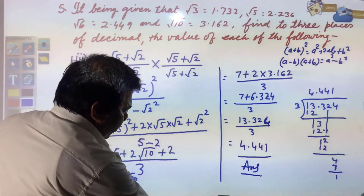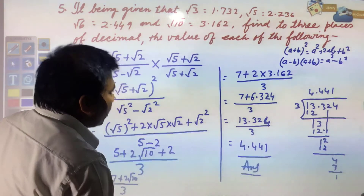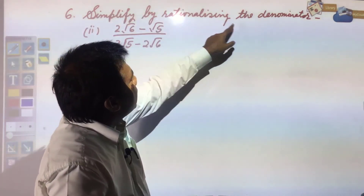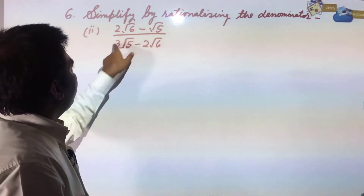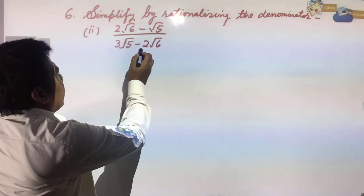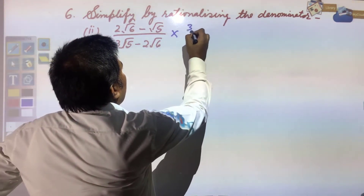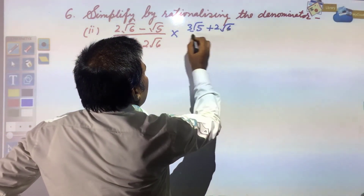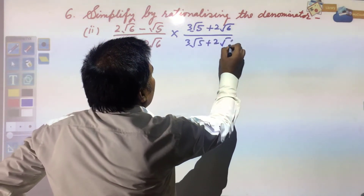Next question: simplify by rationalizing the denominator. This number is required to be rationalized. The rationalizing factor of 3√5 - 2√6 will be 3√5 + 2√6.